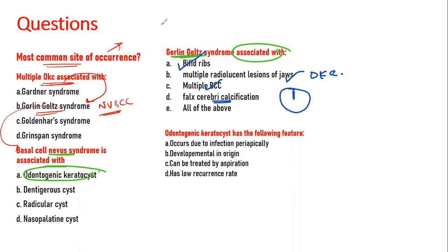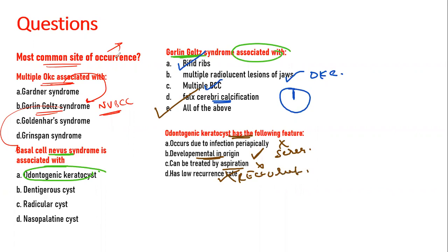The answer to those features is all of the above. For the last question — odontogenic keratocyst features: it does not occur due to infection periodically (that would be the radicular cyst); it is developmental in origin — yes; it arises from the cell rests of Serres — yes; and it cannot be treated by aspiration alone, as it is highly recurrent and you need to remove the lining as well.